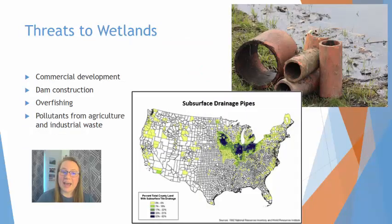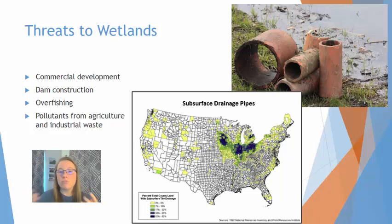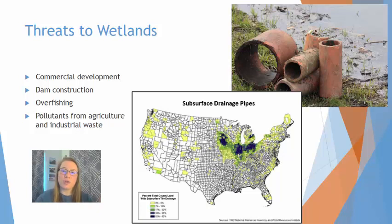Wetlands are under attack and some of the major threats include commercial development, dam construction, overfishing, and pollution from agricultural and industrial waste. Another threat to wetlands is the draining of wetlands. Throughout much of the upper Midwest, the wetlands have been drained in favor of turning that land into productive agricultural land. They do that by putting pipes underground, so water takes the path of least resistance, traveling through the soil into those pipes and then out into drainage ditches or waterways. This has completely changed the landscape of the upper Midwest.